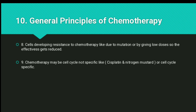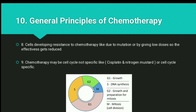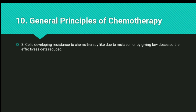The ninth principle is that chemotherapy may be cell cycle non-specific, like cisplatin and nitrogen mustard, or cell cycle specific. The cell cycle consists of G1, S, G2, and M phases. Drugs like cisplatin and nitrogen mustard do not depend on the cell cycle phase; all other anti-cancer drugs are cell cycle specific.